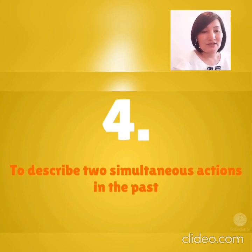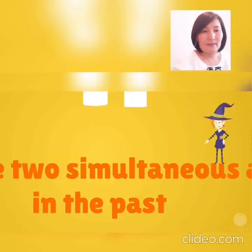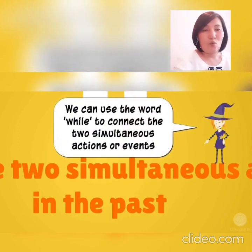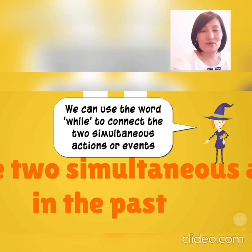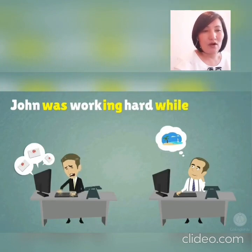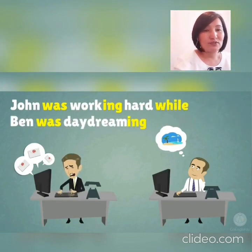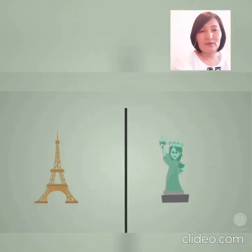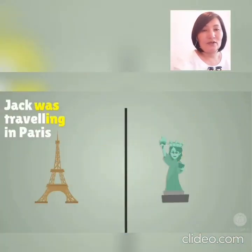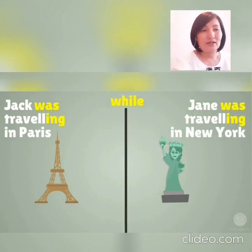Number 4: to describe two simultaneous actions in the past. We can use the word 'while' to connect the two simultaneous actions or events. For example: John was working hard while Ben was daydreaming. Jack was traveling in Paris while Jane was traveling in New York.